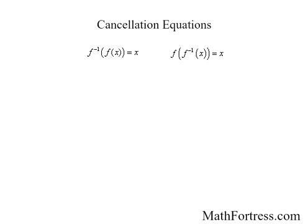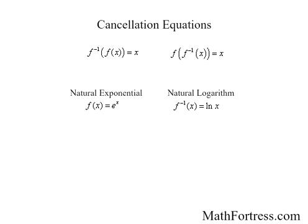Now if we have the natural exponential function f of x equals e to the x, its inverse is equal to ln of x. Using the cancellation equations, we have the following properties of logarithms: e to the power of ln of x is equal to x, and ln of e to the x is also equal to x.